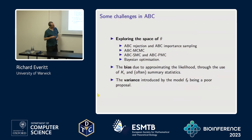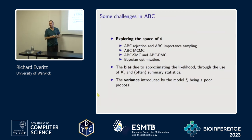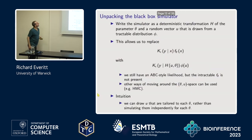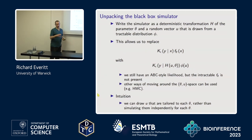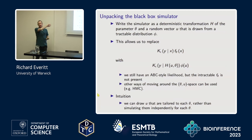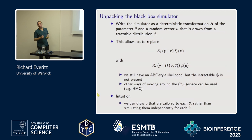Something that people have written a lot about in ABC is how to explore the parameter space — there's a variety of different methods. I've shown you ABC MCMC; we're going to come on to SMC in a minute. So what is our way into helping out with this problem? This relates to a paper called 'A Rare Event Approach to High-Dimensional ABC'.